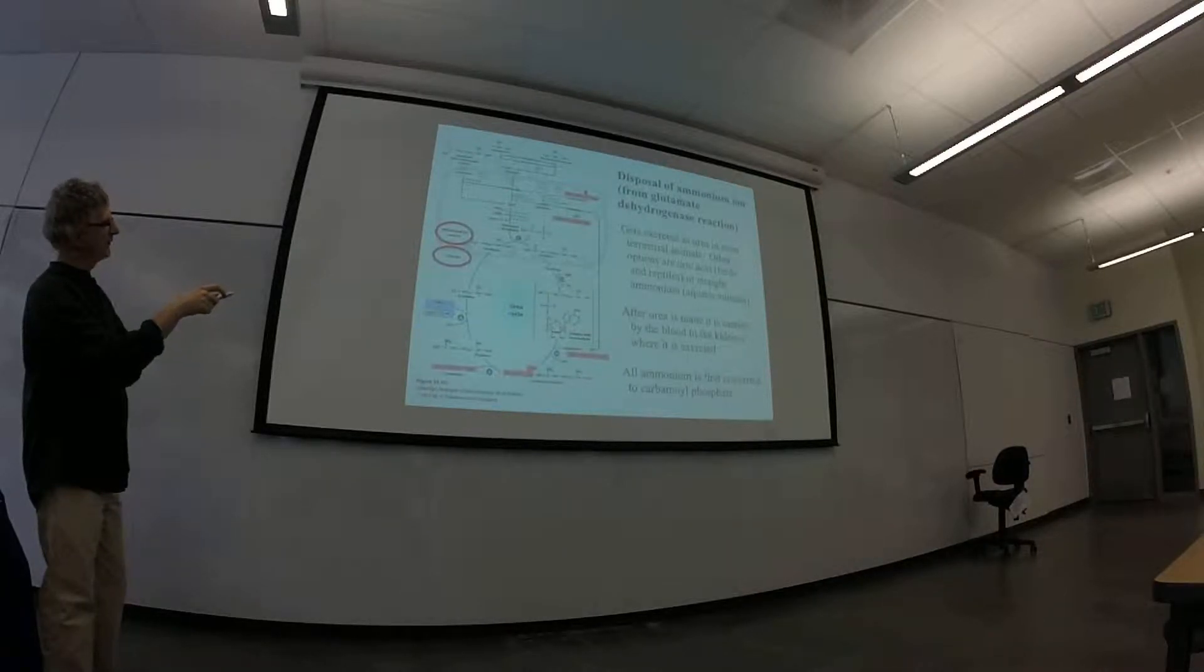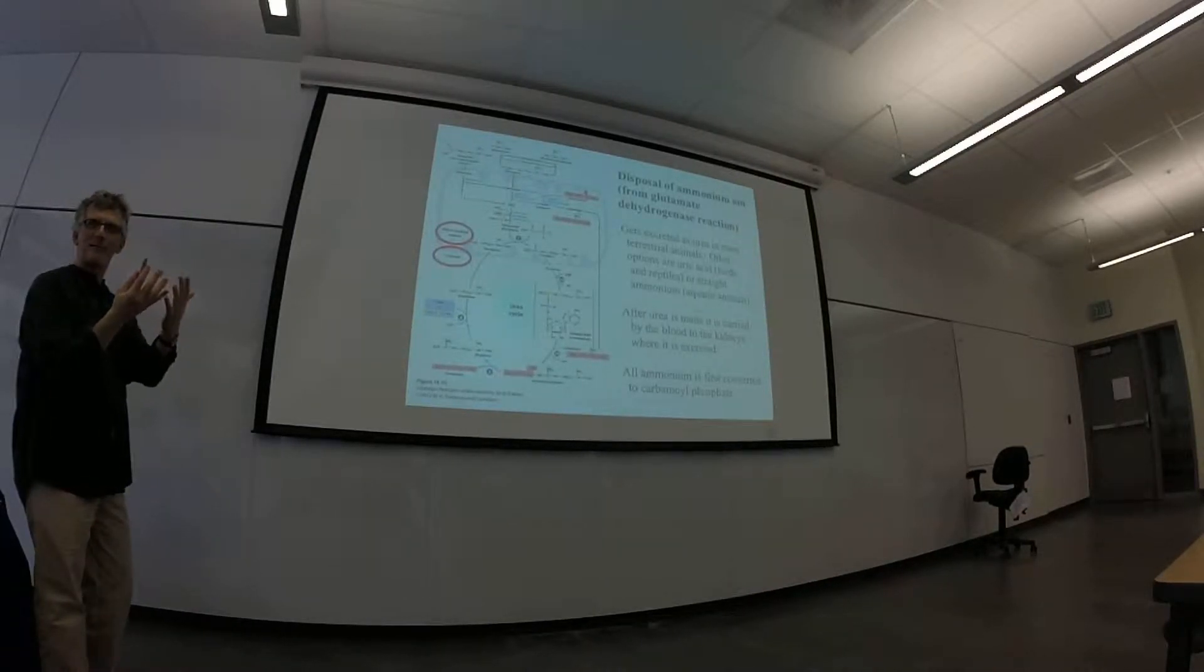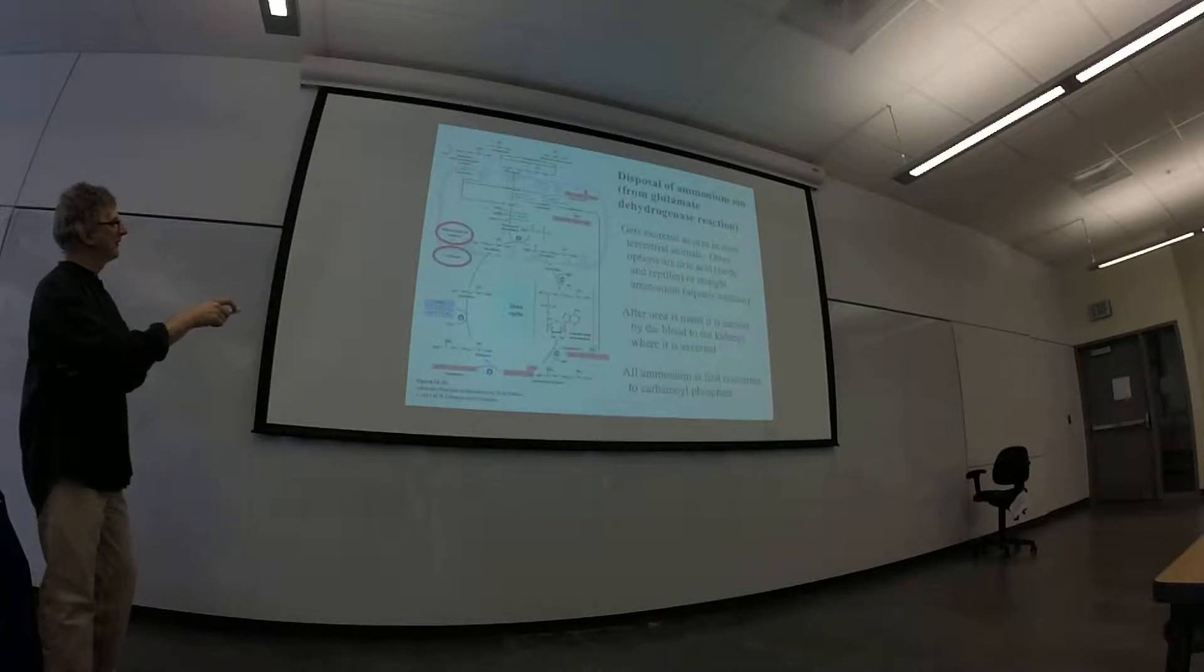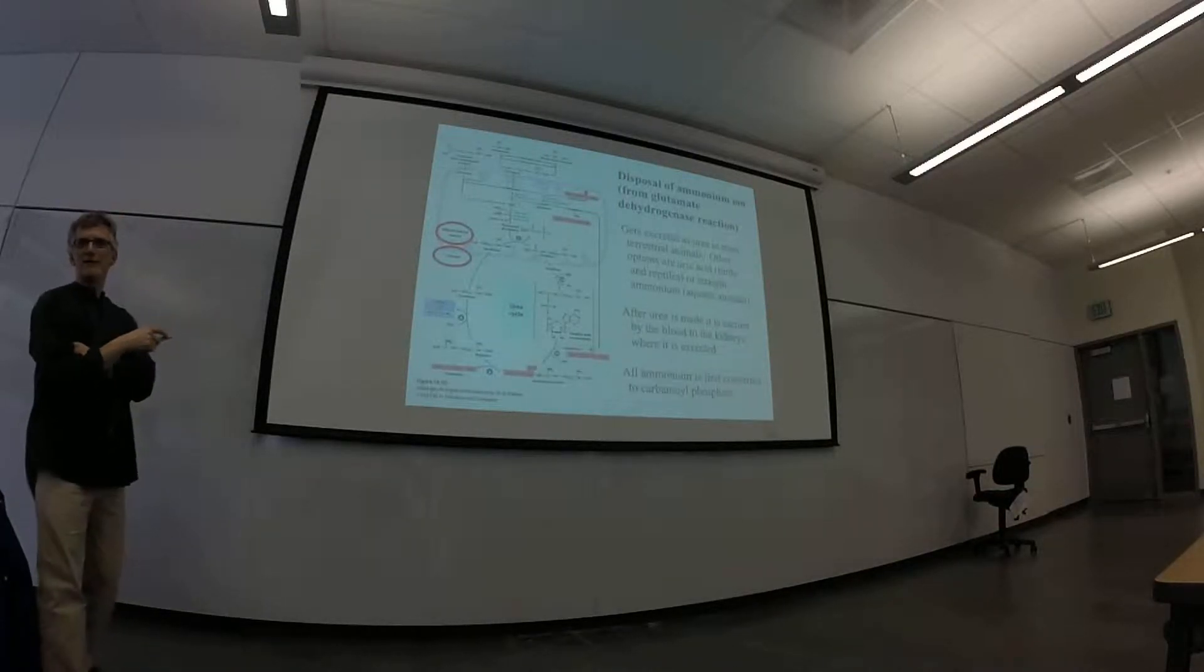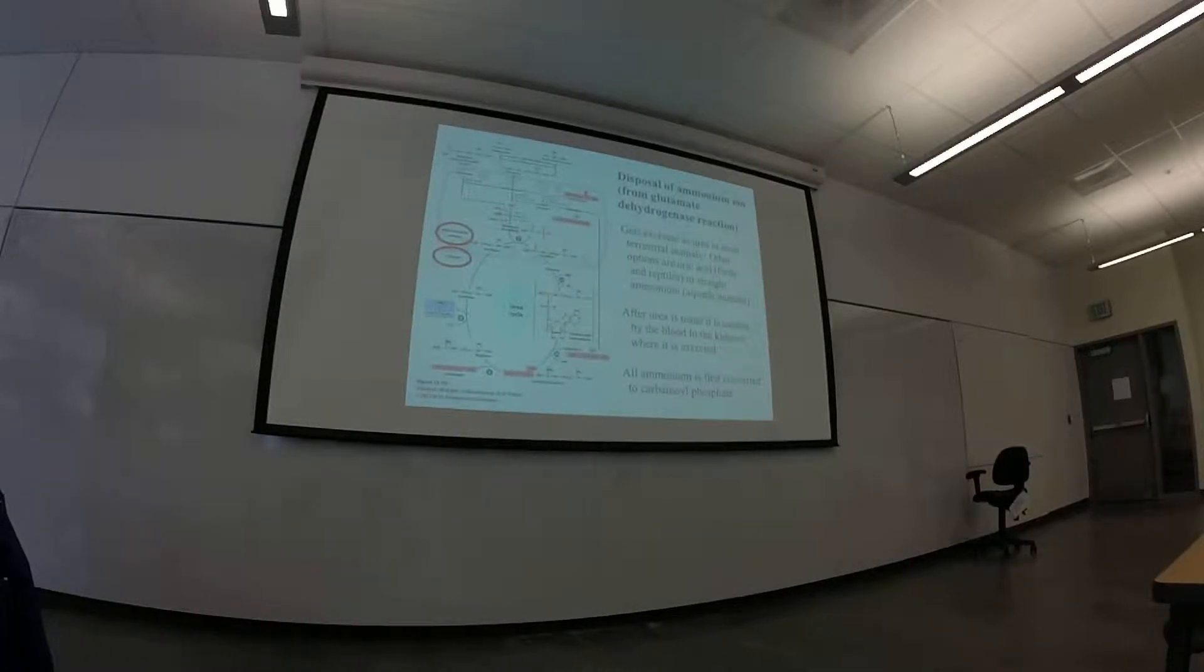And we've also generated alpha-ketoglutarate if we use this reaction here to generate aspartate. So the extra metabolite carbon is showing up in the mitochondria as alpha-ketoglutarate. And once it's in there, it's going to go through the TCA cycle. So you're going to get more energy out of that as well.